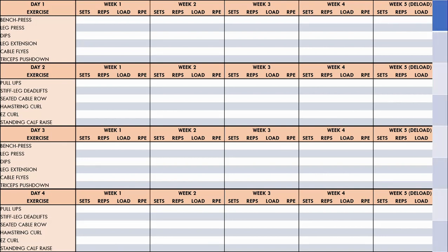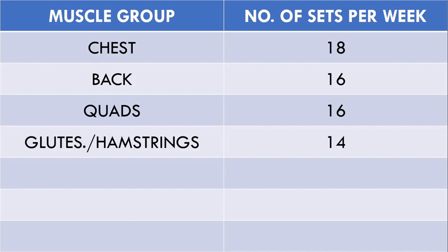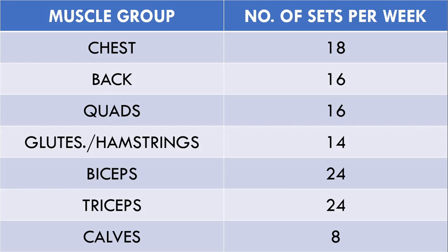This step requires individual experimentation to determine how much volume will achieve the desired hypertrophy adaptations while not exceeding recovery thresholds. For this example, we have chosen 18 sets for the chest, 16 sets for the back, 16 sets for the quads, 14 sets for the glutes/hamstrings, 24 sets for the biceps, 24 sets for the triceps, and 8 direct sets for the calves. I've left out some muscle groups in this example, such as the abs and the delts, because this is just an example and we don't need to go into every single detail. Now that we have the number of sets for each muscle group, we can input the number of sets that will be performed into the program.